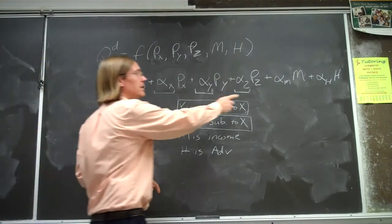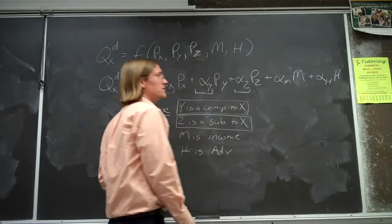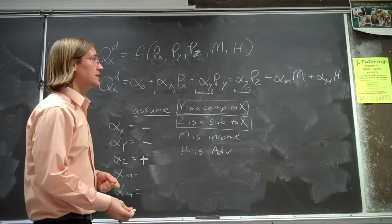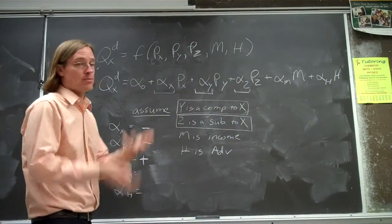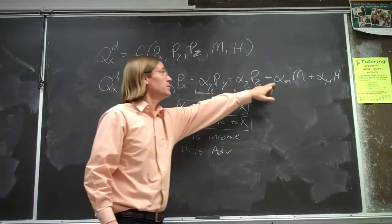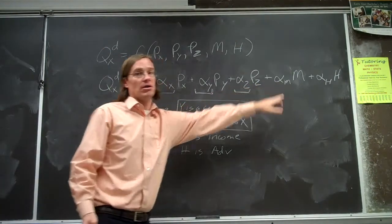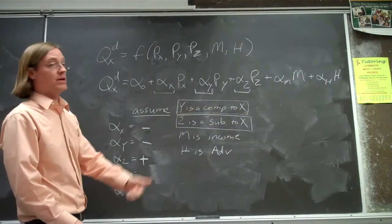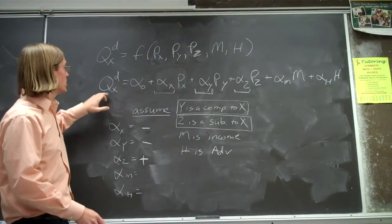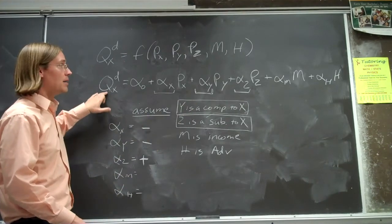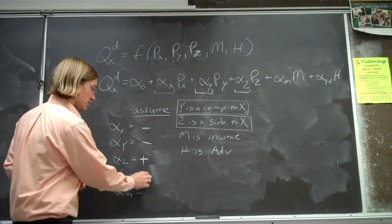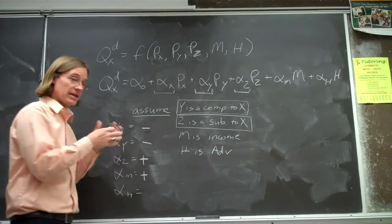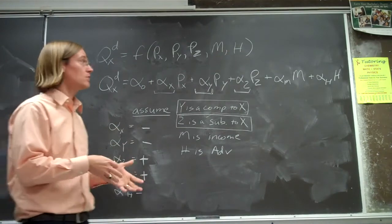The last two variables are income and advertising. For income M, if this is a normal good and we make more money — our income goes up — we're going to buy more of the product. So alpha-M should be positive, assuming it's a normal good.